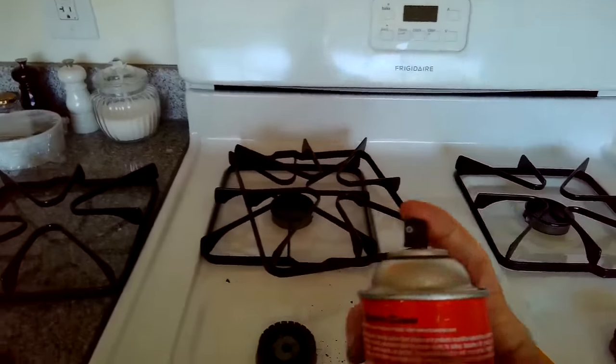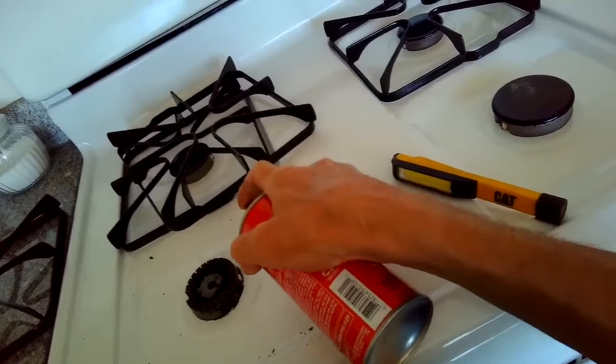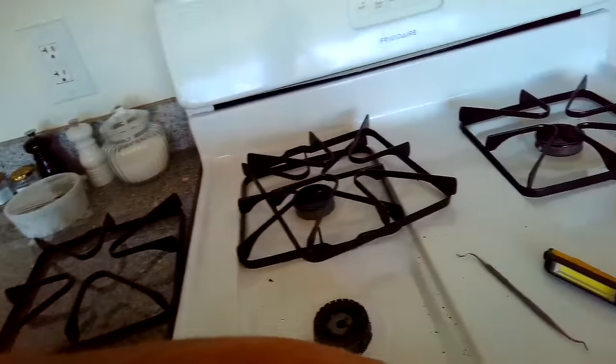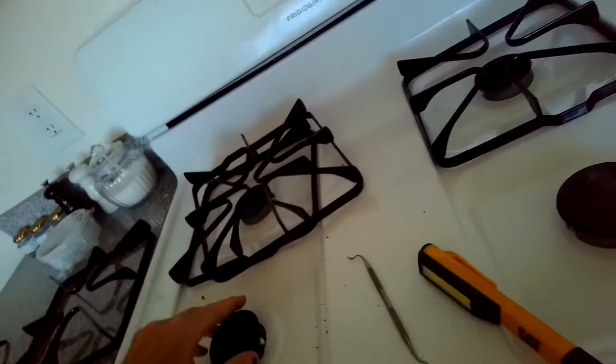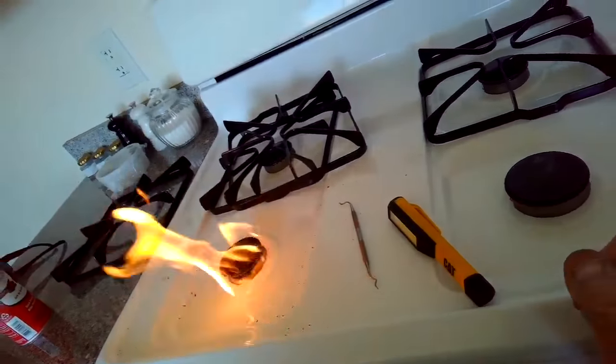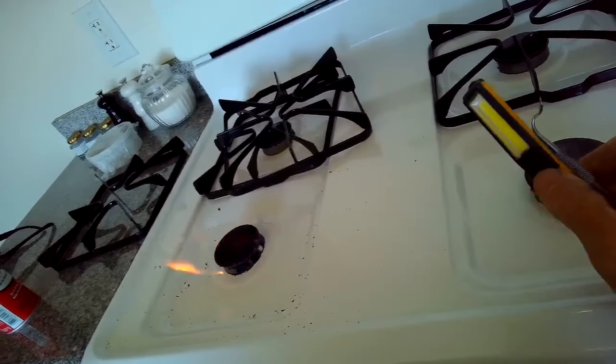I'm also going to use a little bit of this electrical cleaner. You don't have to, but if you have some, you spray it around where the igniter is and also spray it into the gas jet. When you light it, you'll get a pretty big flame, and that's just the cleaner being burned off. It's okay, it won't hurt anything, so just let that burn off.